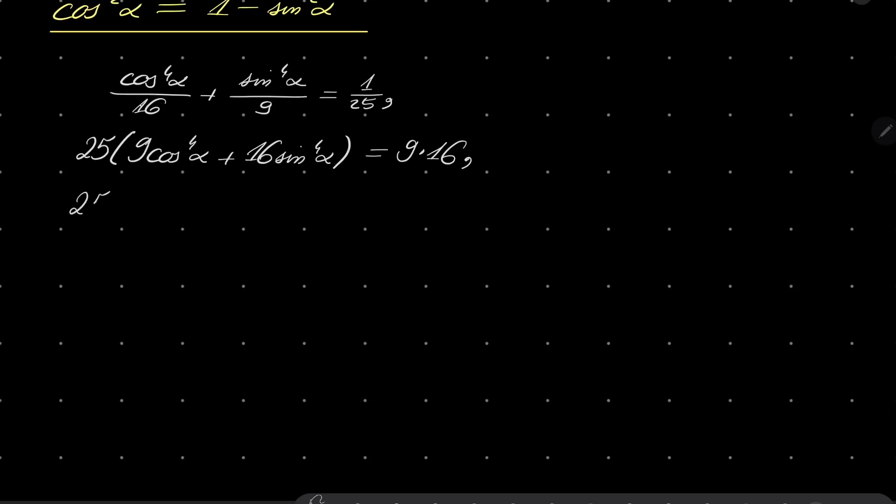And now, 9 cosine to the fourth power of alpha. Instead of cosine to the fourth power, I will write 1 minus sine squared of alpha squared.